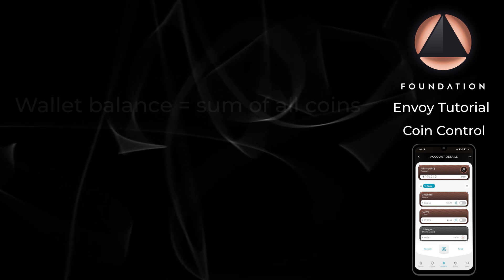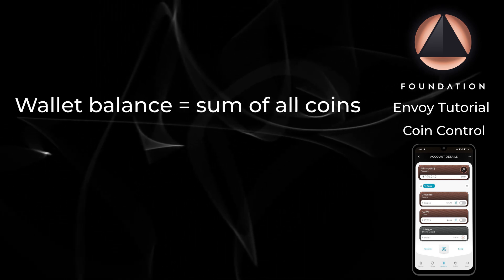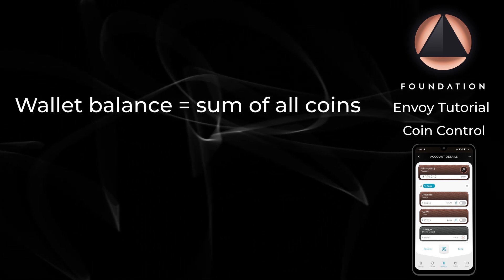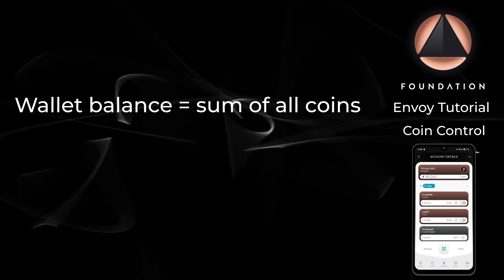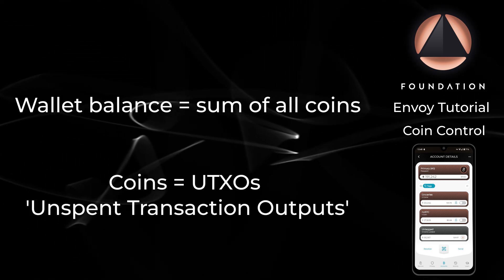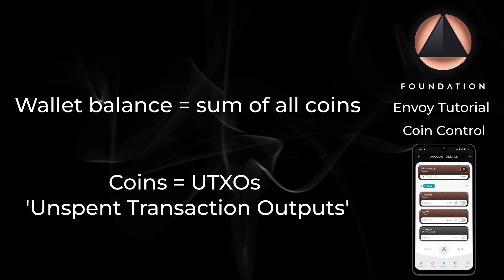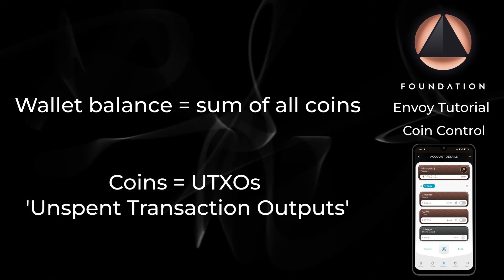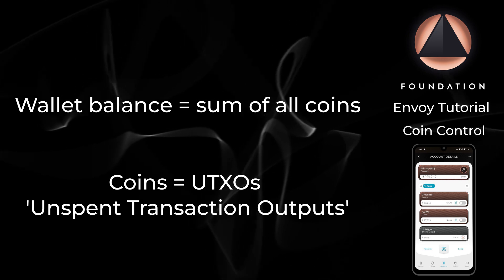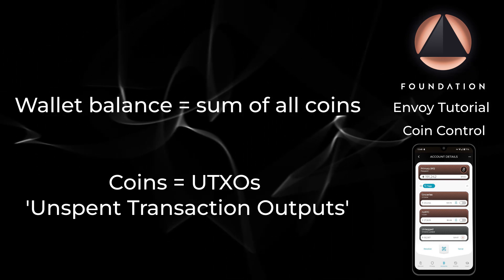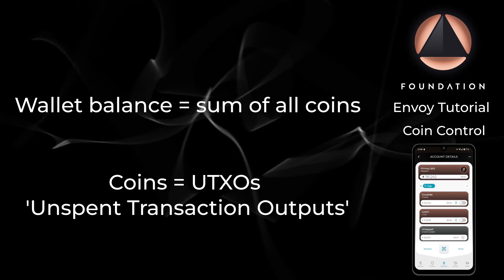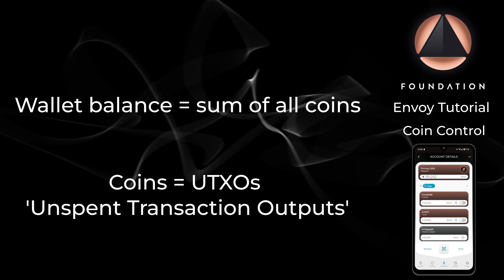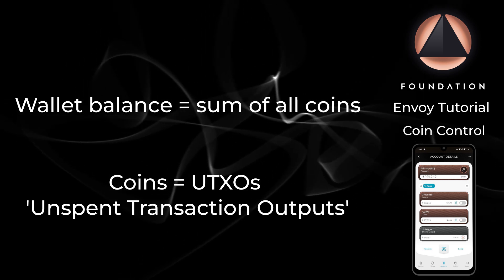Your Bitcoin wallet balance is comprised of many pieces of Bitcoin called coins. Coins are often referred to by the technical community as UTXOs, or unspent transaction outputs. How many coins you have and what size each of them are depends entirely on how you have used your wallet in the past.